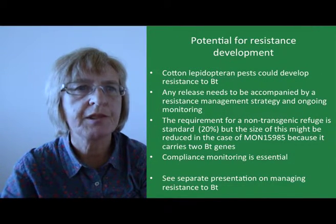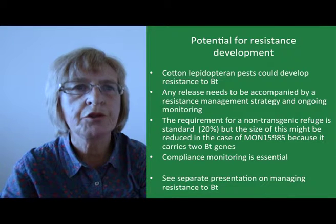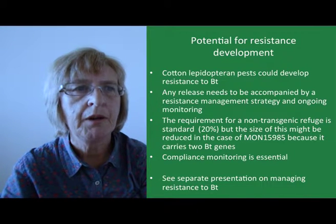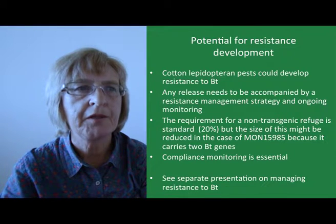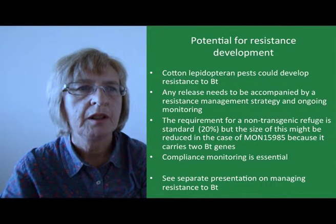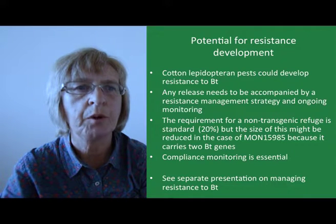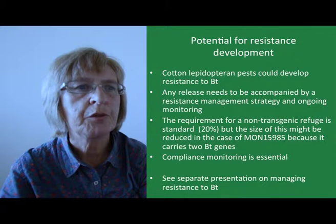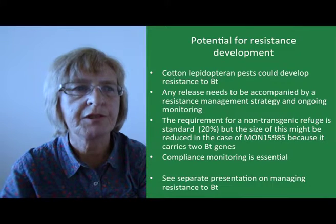Another concern for BT crops is that the target Lepidopteran pests could develop resistance to BT. The inclusion of two BT genes in MON15985 is one way to delay the onset of resistance. However, any release needs to be accompanied by a resistance management strategy and ongoing monitoring. The requirement for a non-BT refuge is generally standard and is normally 20% for cotton, but the size could potentially be reduced for MON15985 because it carries two BT genes. It is also essential to explain to farmers the importance of the refugia.